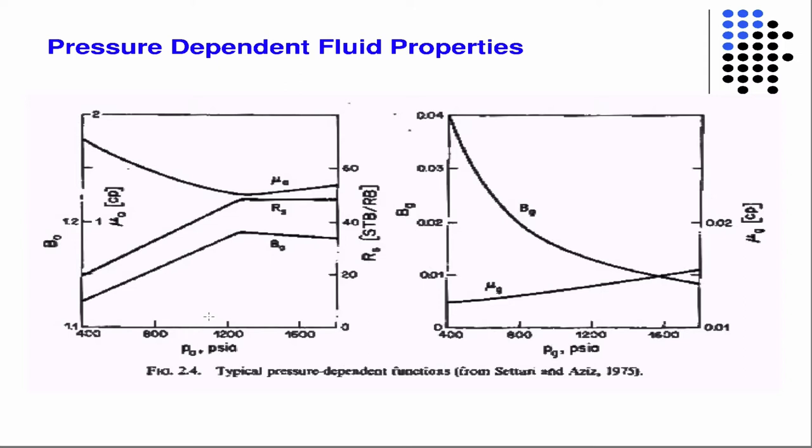So this is where we start to introduce constitutive models. And just a couple of things. So we mentioned that the formation volume factors for oil and gas are not just constants. They're functions of pressure. And so let's sort of see what happens. So in this figure, it's really easy to tell where the bubble point is. It's right here.